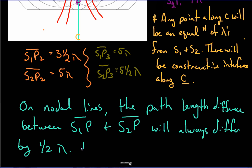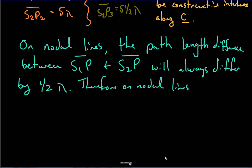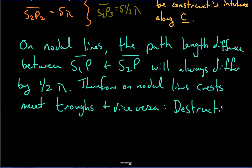And what this therefore means is, therefore, on nodal lines, crests meet troughs and vice versa. So what does that mean? You always have destructive interference on nodal lines.